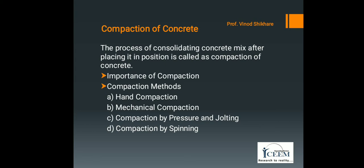The next point is compaction by pressure and jolting. This is one of the effective methods of compacting very dry concrete. This method is used for compacting hollow blocks, cavity blocks, and solid concrete blocks. The stiff concrete is vibrated, pressed, and also given jolts, and due to this the stiff concrete gets compacted to give good strength.